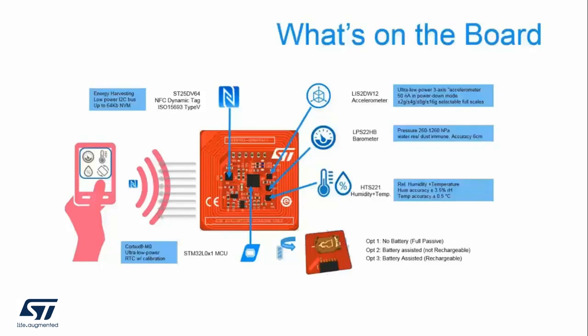The second mode is non-rechargeable battery. In this mode, the tag logs sensor data at a configurable interval. The third mode is rechargeable. In this case, the NFC magnetic field can be used to recharge the onboard battery so that it can be used over and over again. Once again, the tag needs to be in the RF field for energy harvesting to occur.